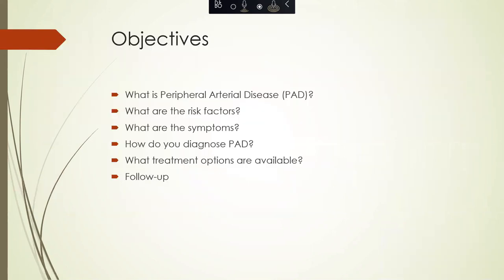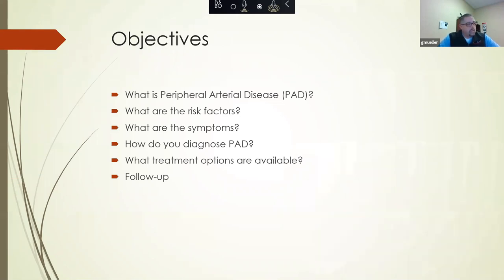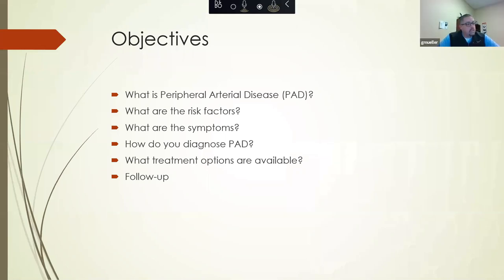The main objectives for today are to go over what peripheral arterial disease is — I will more than likely use the acronym PAD. We'll cover what some of the risk factors are, what symptoms you may be experiencing, how we diagnose peripheral arterial disease, and what treatment options are available.